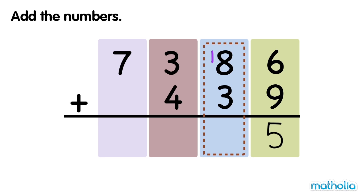Next, we add the tens. 1 ten plus 8 tens plus 3 tens equals 12 tens. We regroup 12 tens into 2 tens and 1 hundred.